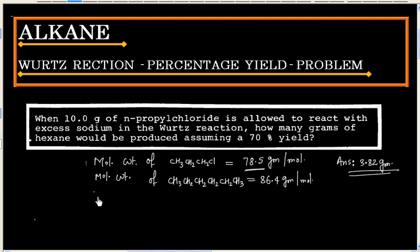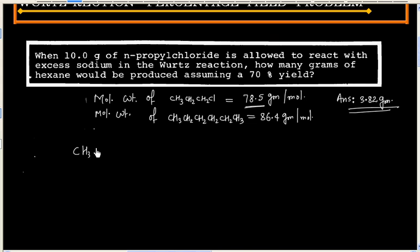We can write equation for formation of hexane using n-propyl chloride. This is the balanced chemical equation.